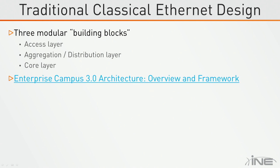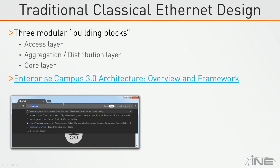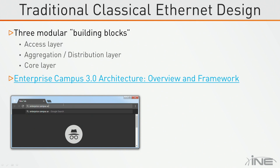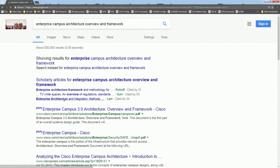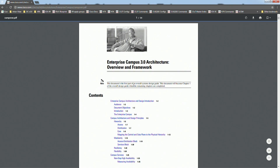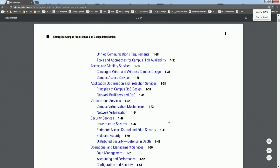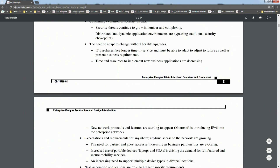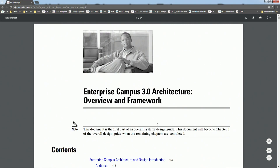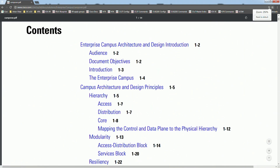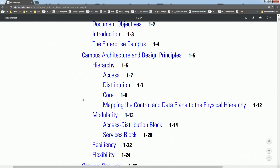You should be able to click the link from the PDF copy of the slides, but let me go ahead and search for this one — Enterprise Campus Architecture Overview and Framework. There may be a newer version than 3.0, but this goes over the hierarchy we're talking about: the three-layer design — access, distribution, and core.